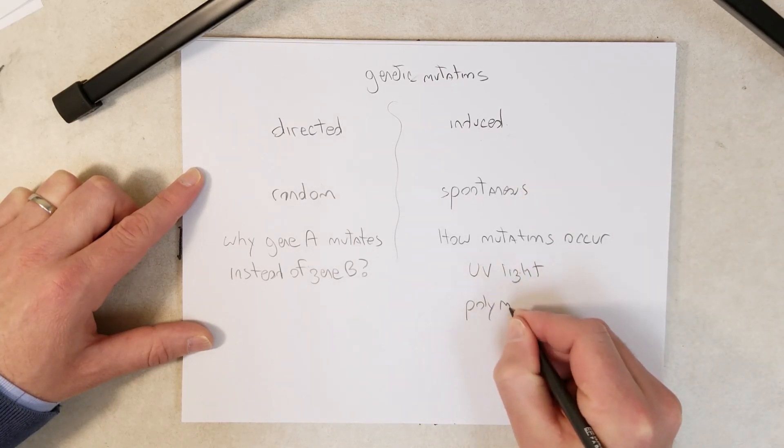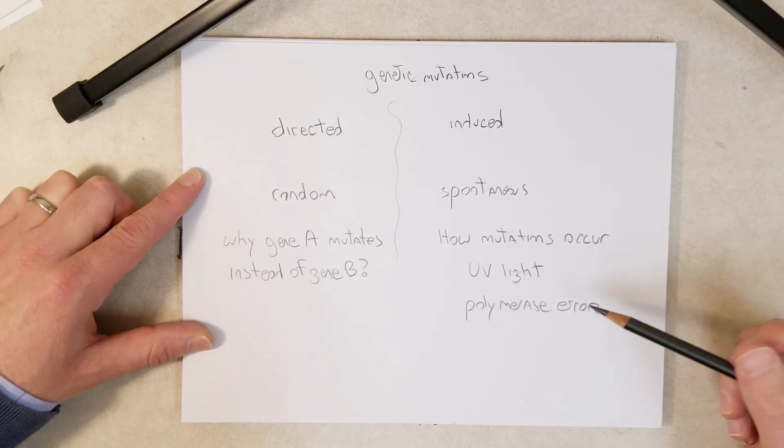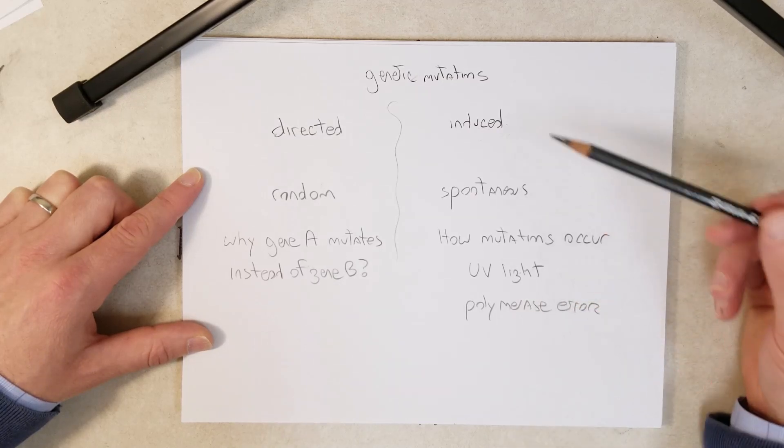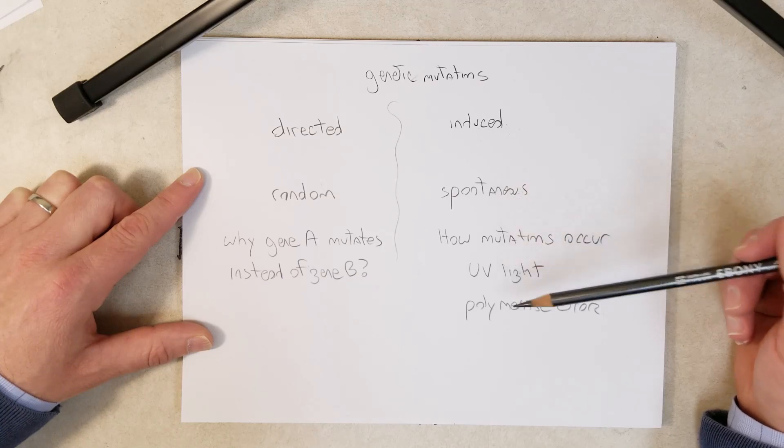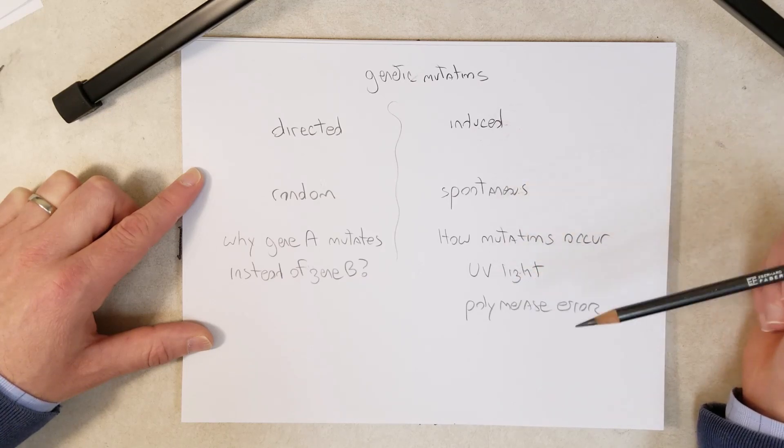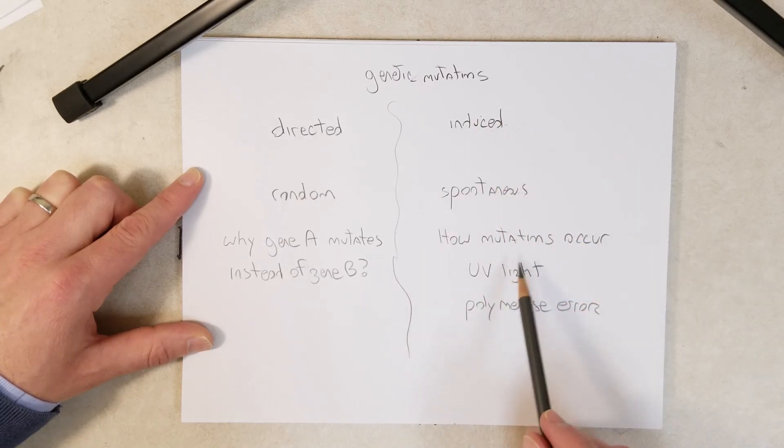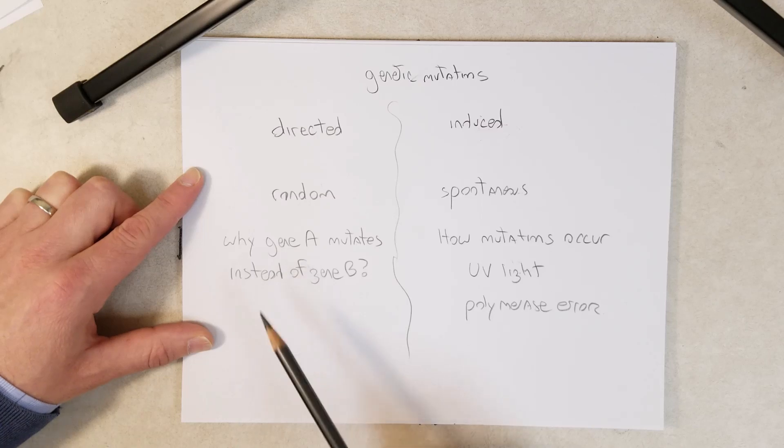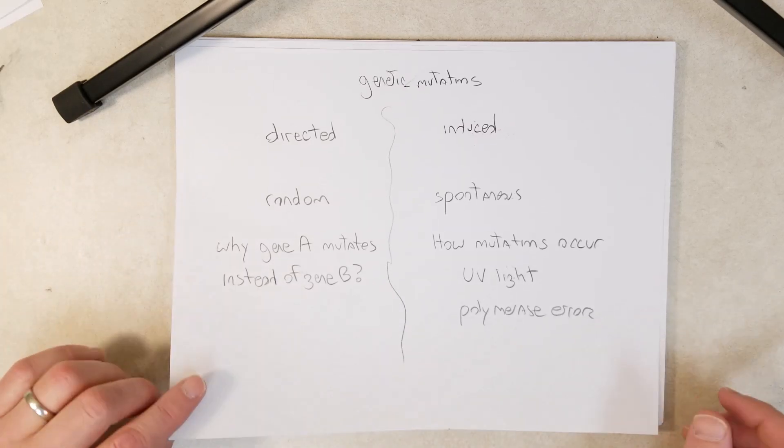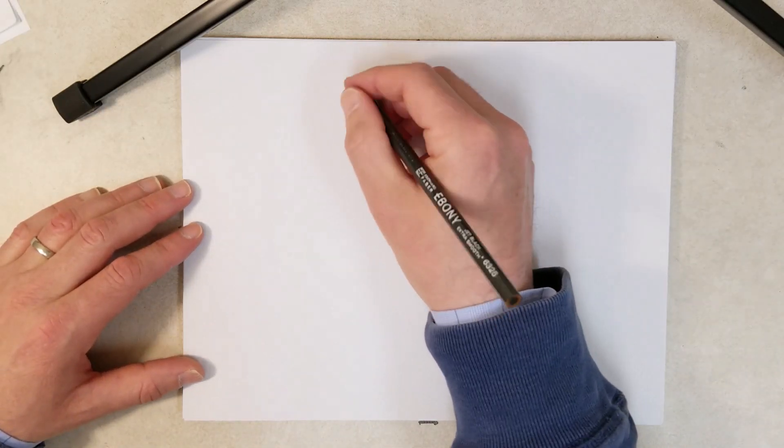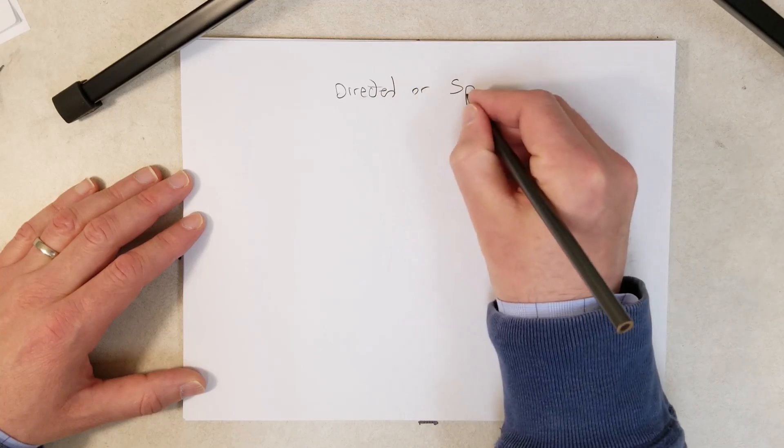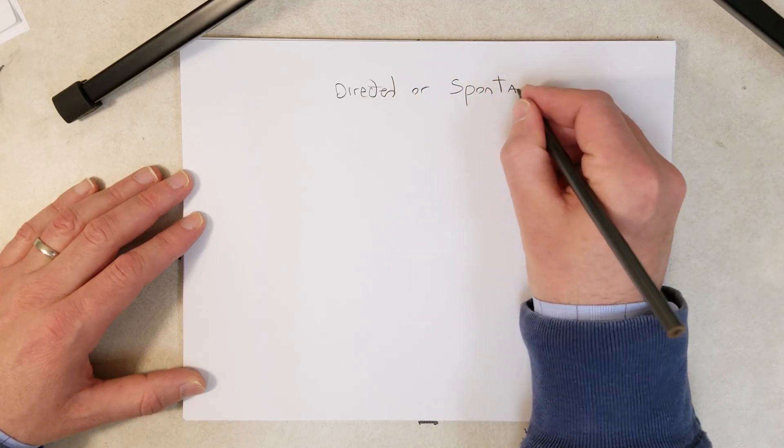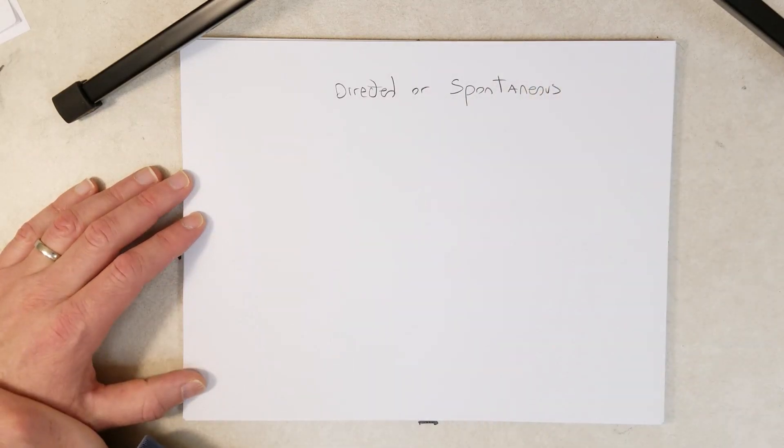If a mutation occurs by a polymerase error, is that induced or spontaneous? We have two ways to classify mutations based on how they occur: induced or spontaneous. We'll use those terms for this concept. Specifically in this video, we are going to talk about are mutations directed or spontaneous. We'll cover the other terms in an upcoming video.